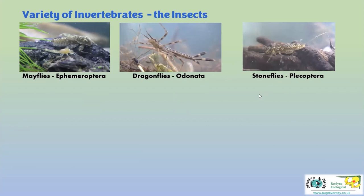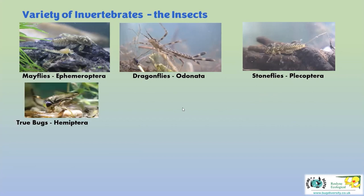Stoneflies - we're not very well endowed with stonefly species in the chalk streams of southern England. They really come into their own in the north and west, in boulder streams and faster-flowing waters. We've got a few species but they never become particularly numerous. Then there are true bugs - the lesser water boatman will only really survive in the slower margins of the river; they're not strong enough swimmers to cope with the mainstream.